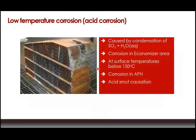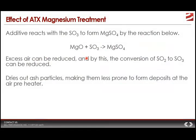An example of low temperature corrosion in an economizer shows significant corrosion damage caused over time by condensation of sulfuric acid onto the equipment — it will have to be replaced. This happened in the economizer area when the surface temperature of the metal was below 150 degrees — below the likely dew point for that particular stream. The magnesium in ATX reacts with SO3 that had been formed, neutralizes it, and turns it into harmless magnesium sulfate.